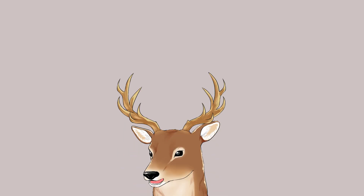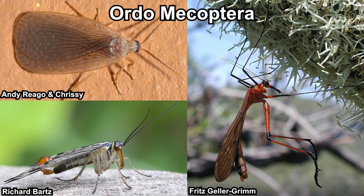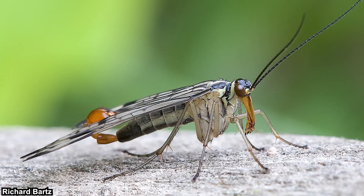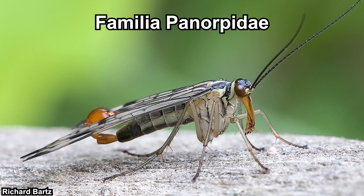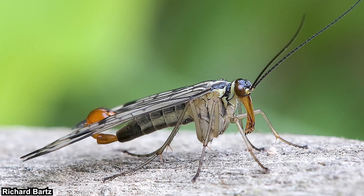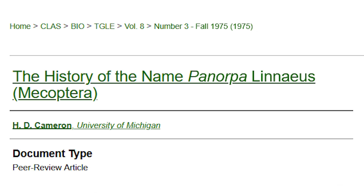It depends on who you ask. Scorpion flies could refer to an entire order or a specific family within that order. Some consider the entire order Mecoptera as scorpion flies — 'mechus' means long and 'pteron' means wing, so it's basically 'long wing.' The specific family Panorpidae is the mecopterans with this kind of tail, so technically this is the true scorpion fly.